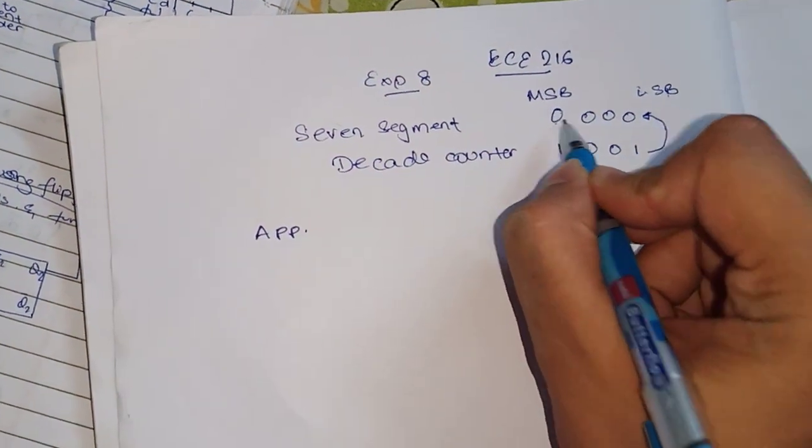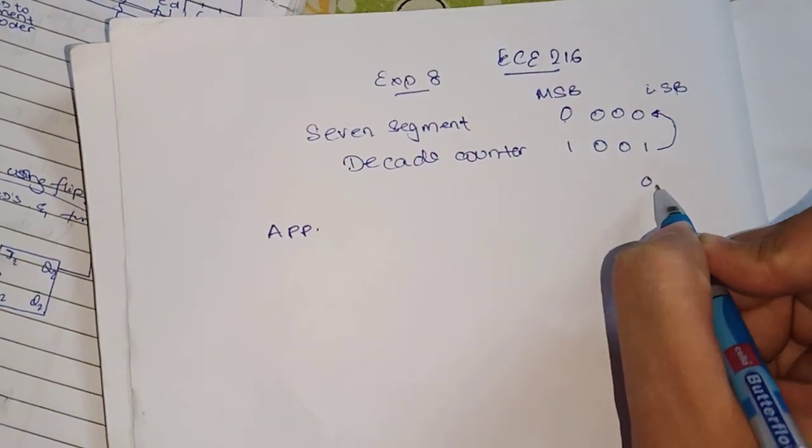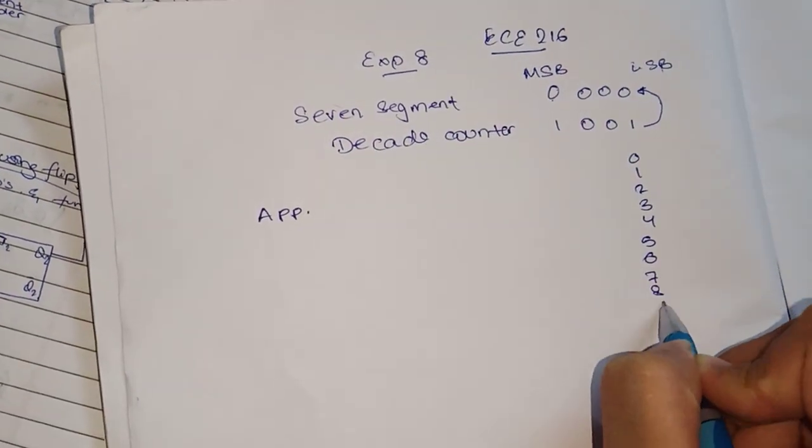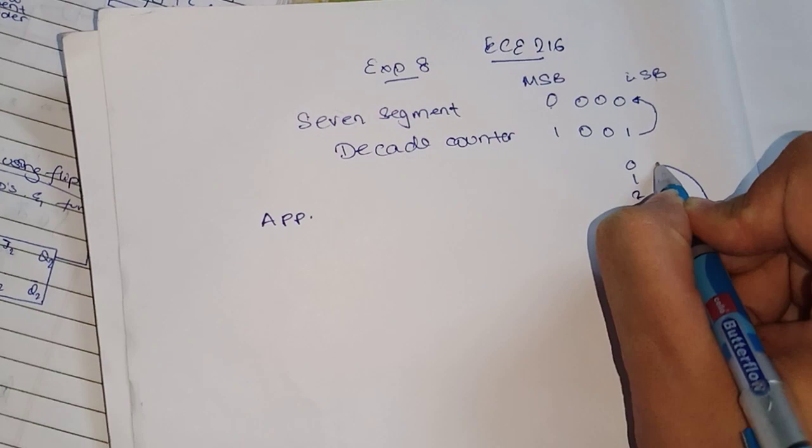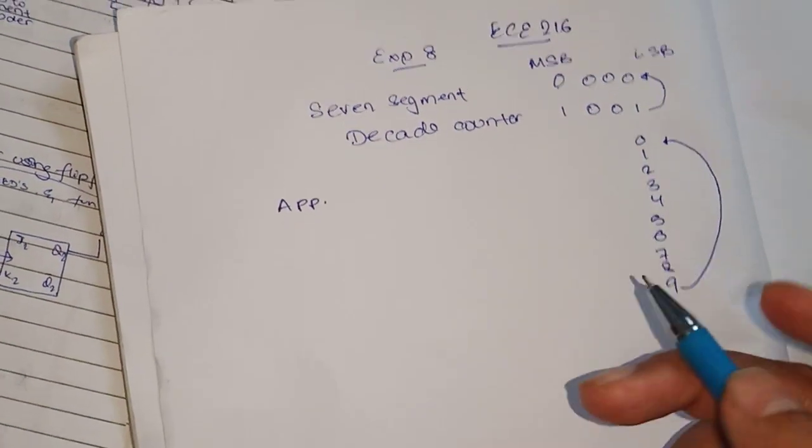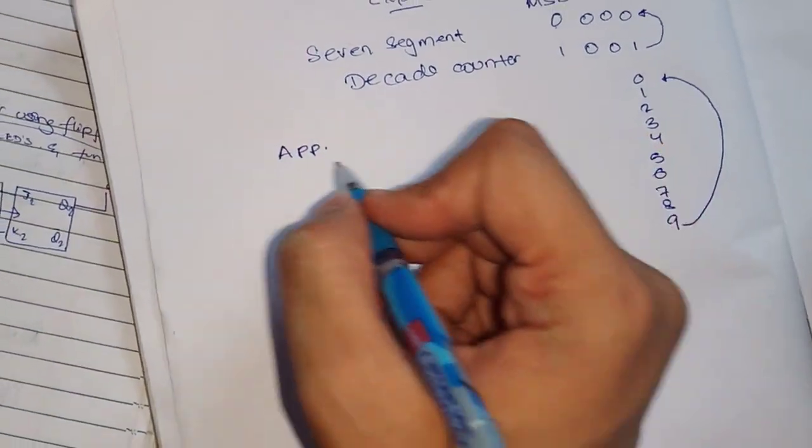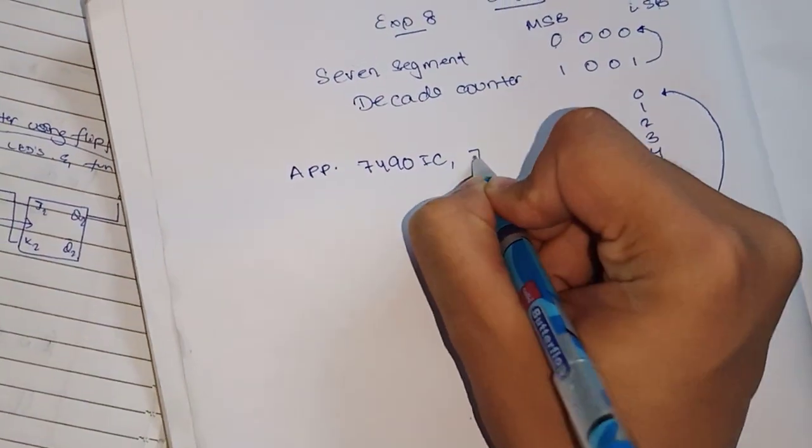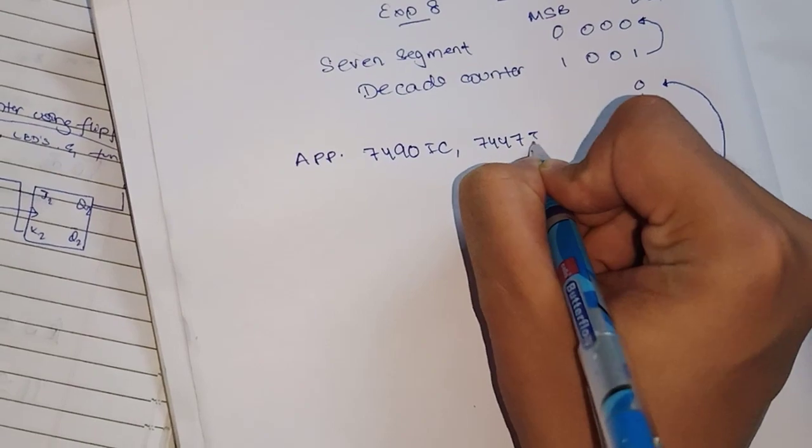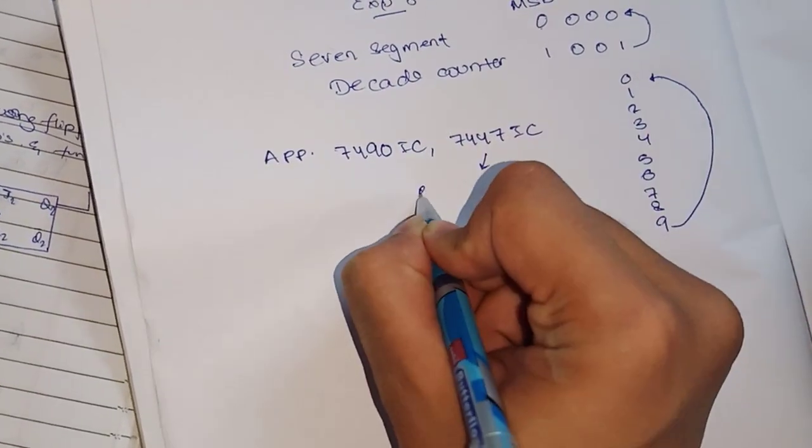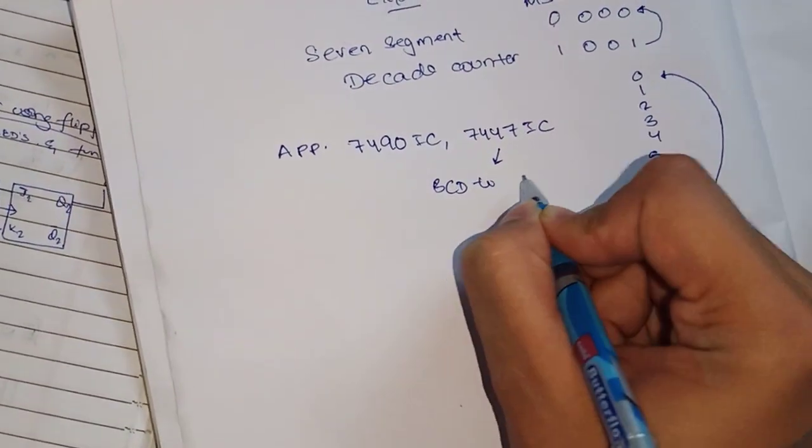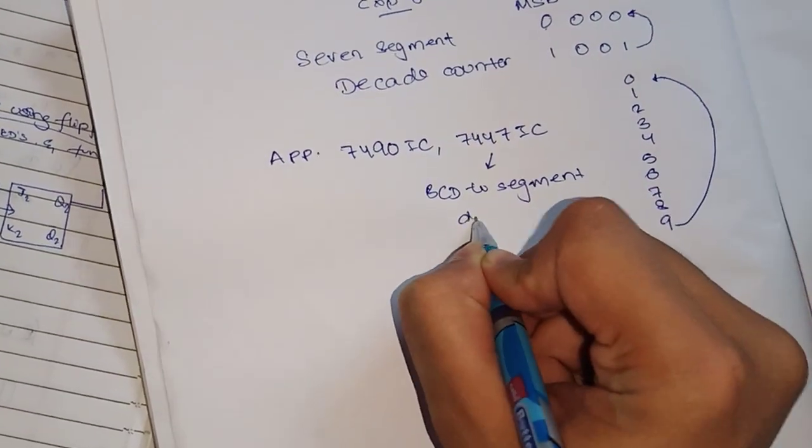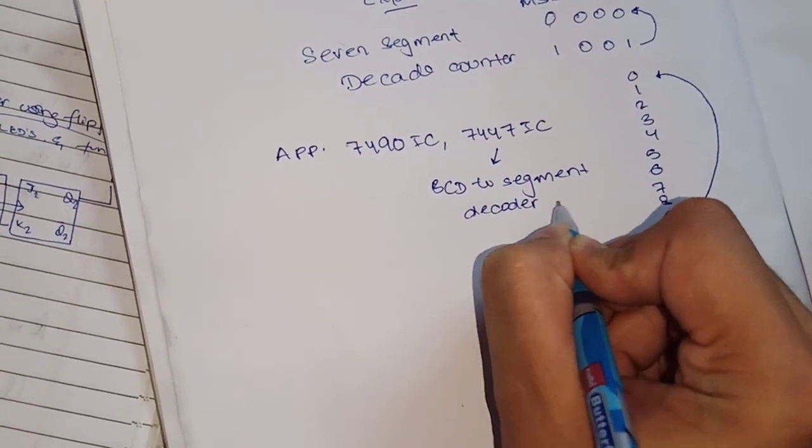The count goes from 0 to 9: like 0, 1, 2, 3, 4, 5, 6, 7, 8, 9, and then again 0. The apparatus required are first the 7490 IC, then the 7447 IC which will act as BCD to 7-segment decoder.